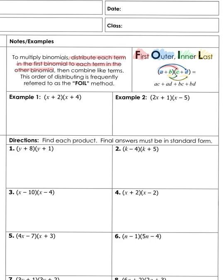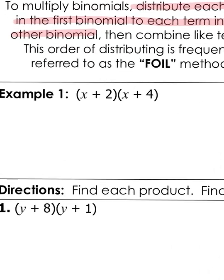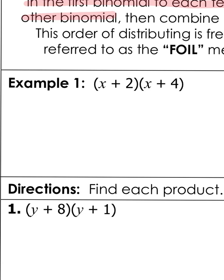Essentially, whatever goes first gets multiplied to each thing in the other binomial, and whatever term comes second goes to each piece in the binomial. Let's do an example: X plus 2 times X plus 4. Following FOIL, we do First — the first term in each binomial — so X times X. This is X to the first times X to the first, and when you multiply you add exponents, so that becomes X squared.